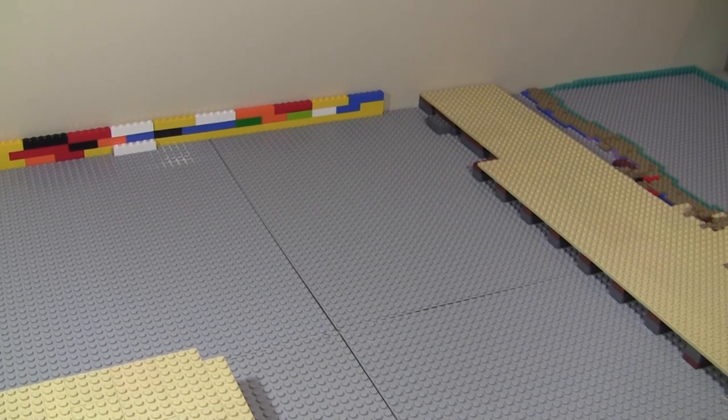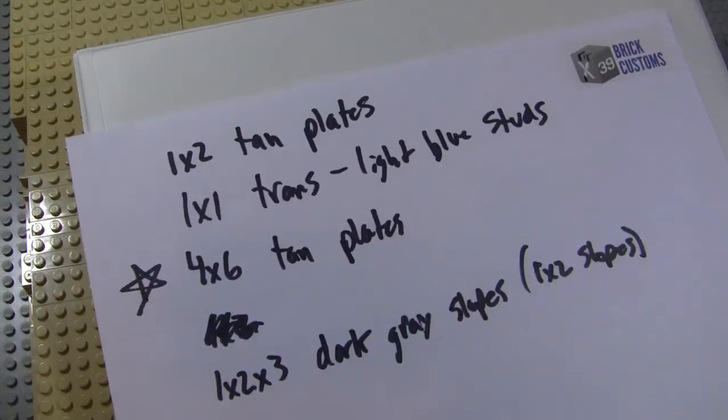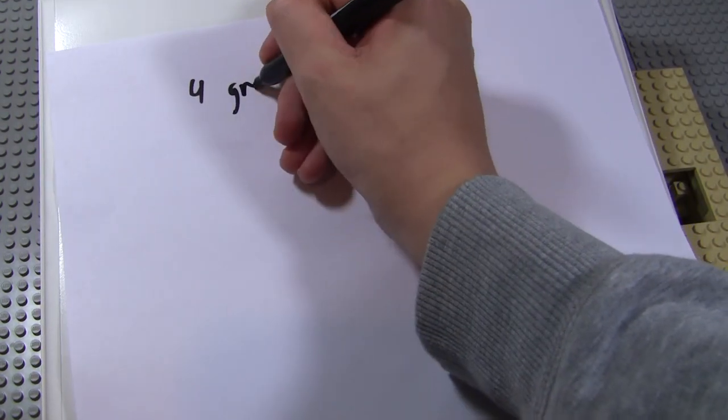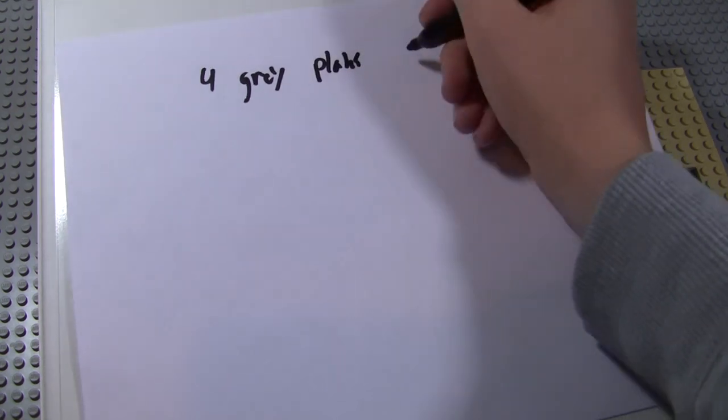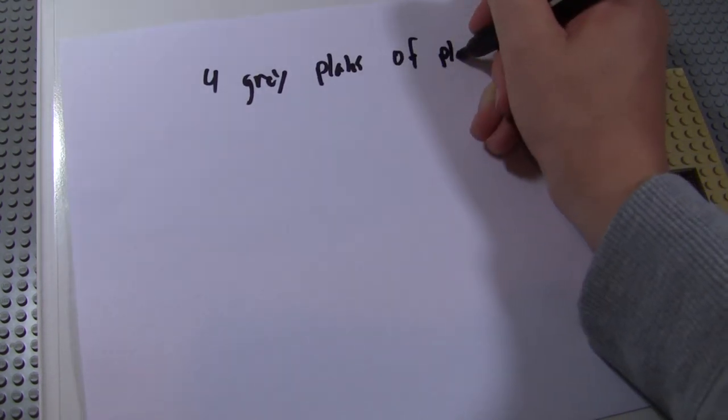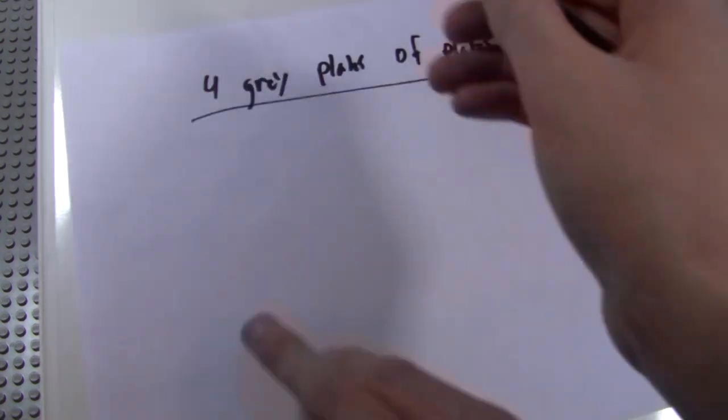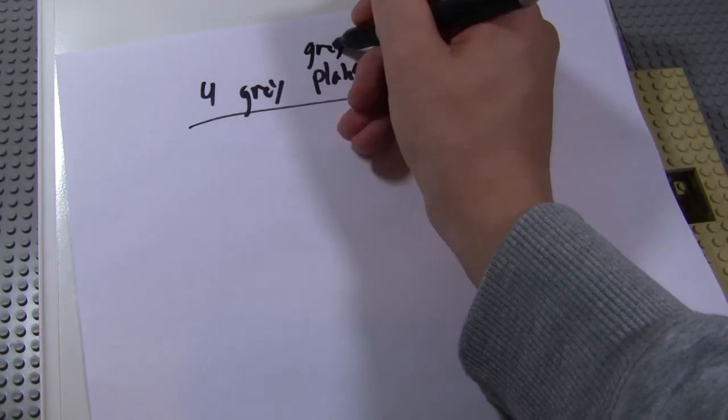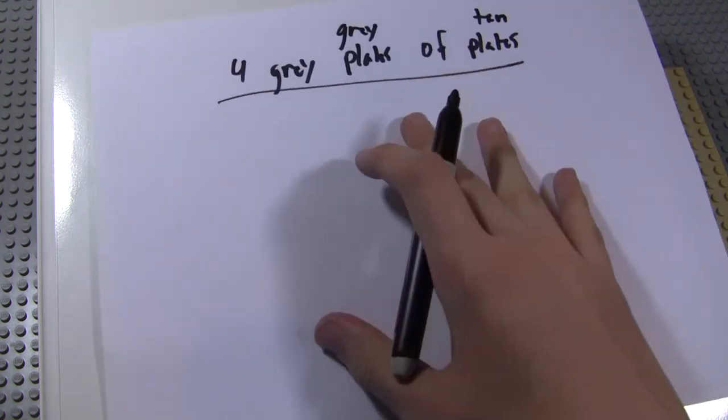Now, how do we do the math to actually predict how many we're going to need? So let's get a new piece of paper and go over that. Okay, so we got our new piece of paper. Now, how do we calculate a rough estimate on how many plates we need? So we know we need four gray base plates worth of tan plates. We need four gray base plates worth of tan plates. You guys know what I'm talking about.